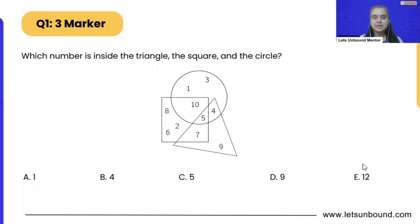Now if you will see the shape carefully, we are not having 12 as the number, right? So we can automatically delete this 12 from the list. Now we are left with only four options: 1, 4, 5 and 9.